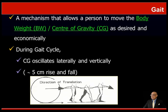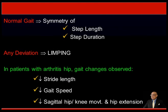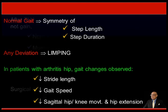Gait is a mechanism that allows a person to move the body weight and the center of gravity as desired and very economically. During the gait cycle, the center of gravity oscillates laterally and vertically, usually with a 5 cm rise or fall. In normal gait there is symmetry of step length and symmetry of step duration, and any deviation from either of these will lead to limping. In patients with arthritis of the hip, gait changes are observed such as a decrease in stride length, decrease in gait speed, and a decrease in sagittal hip-to-knee movement and hip extension.